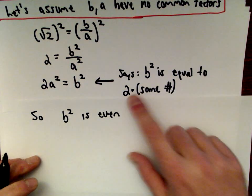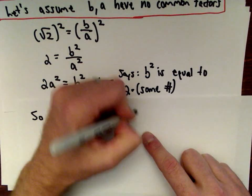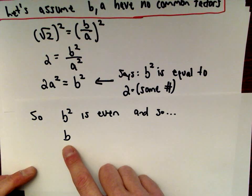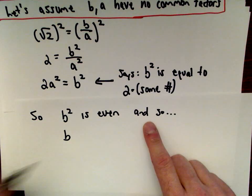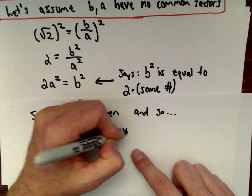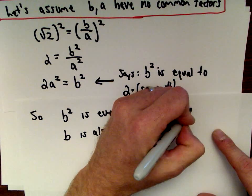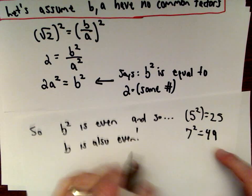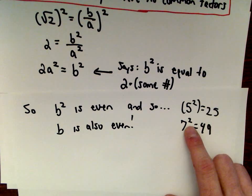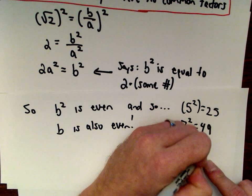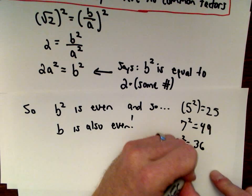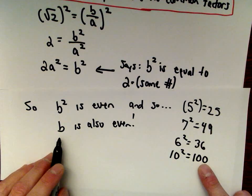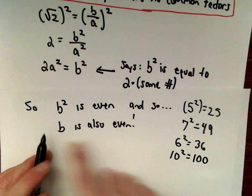If b squared is even, what can we conclude about b? Well, if b squared is even, then b is also even. Think about it — if you take odd numbers and square them, 5 squared is 25, 7 squared is 49. If you take an odd number and square it, you still get an odd number. If you take an even number and square it, you still get an even number. So if b squared is even, the original number b is also even.